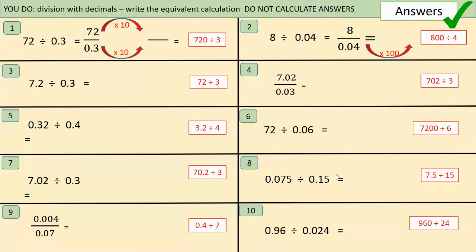Hopefully you can see that all the calculations are now much simpler — we can do them with a bus stop division. It doesn't matter if I am left with a decimal to divide, as long as the number I'm dividing by — the number that goes outside the bus stop — is an integer, a whole number.